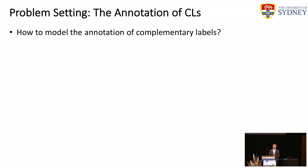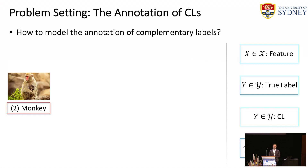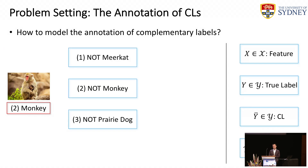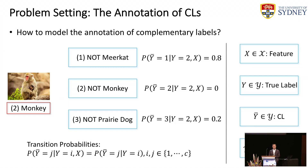To begin with, we need to introduce how to model the annotation of complementary labels. We denote X as the feature, Y as the true label, and Ȳ as the complementary label. For example, given an image of a monkey, we provide a set of candidate complementary labels. We use a probability to indicate how likely each candidate is selected as a complementary label — this probability is the transition probability. We also assume that given the true label, the complementary label and the feature are conditionally independent.